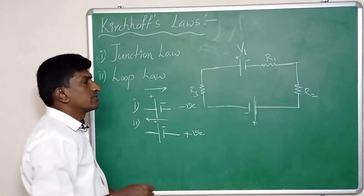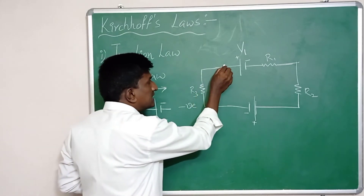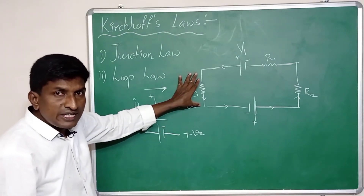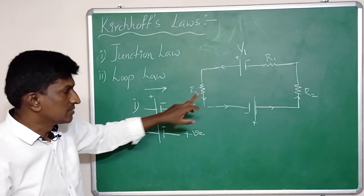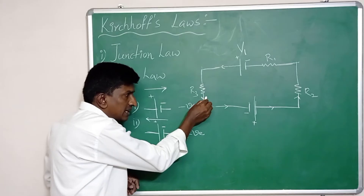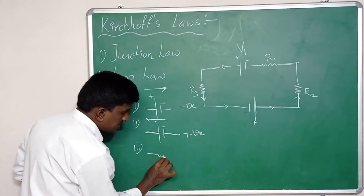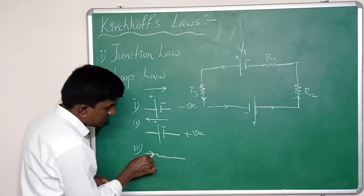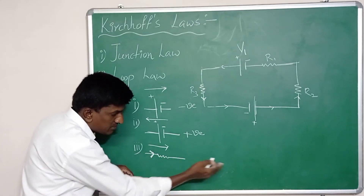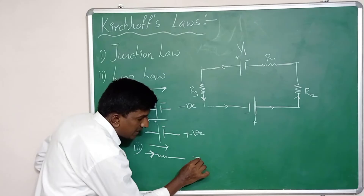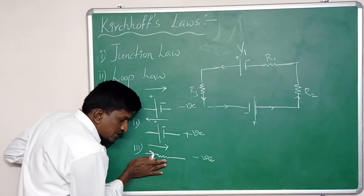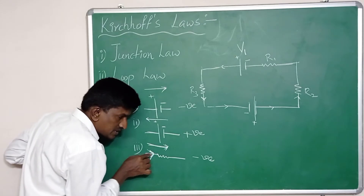For the potential difference in a resistor, we must follow the direction of electric current. In the resistor, if we measure the potential difference in the direction of current flow, that value is taken as negative.